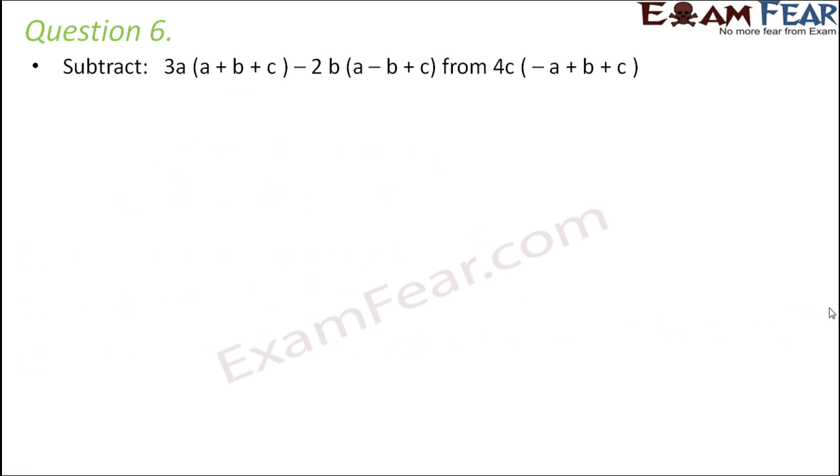Question number 6. Subtract 3a(a + b + c) - 2b(a - b + c) from 4c(-a + b + c). So you have to subtract it from this expression. Let us first simplify this part of the expression.